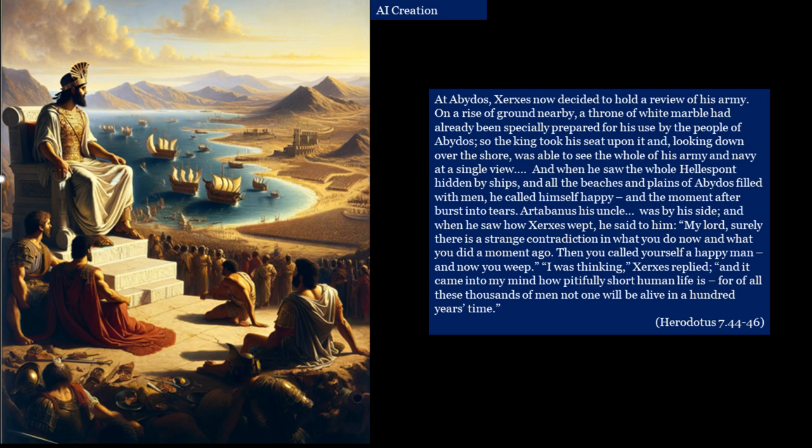He arrived at a place called Abydos, and Herodotus records that Xerxes held a review of his army. On a rise of ground nearby, a throne of white marble had been specially prepared for his use. The king took his seat upon it, and looking down upon the shore was able to see the whole of his army and navy in a single view. When he saw the whole Hellespont hidden by ships and all the beaches and plains filled with men, he called himself happy — and the moment after burst into tears.